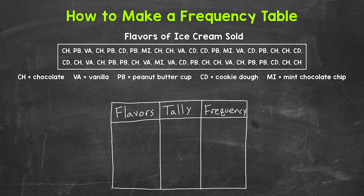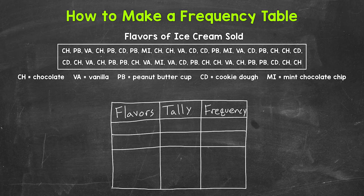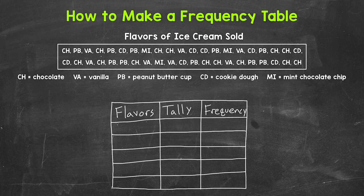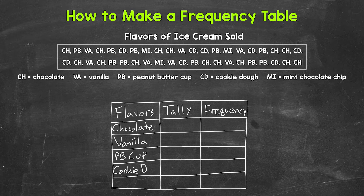Next, we need our rows for the flavors, so we need five. Let's fill in the flavors: chocolate, vanilla, peanut butter cup, cookie dough, and mint chocolate chip.